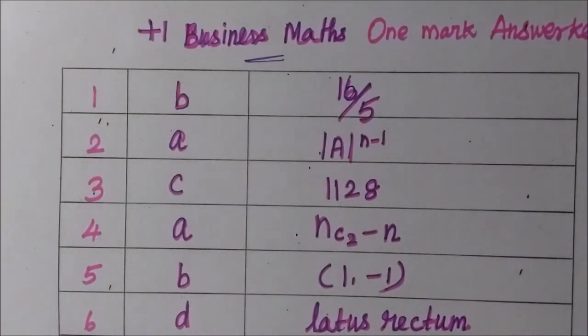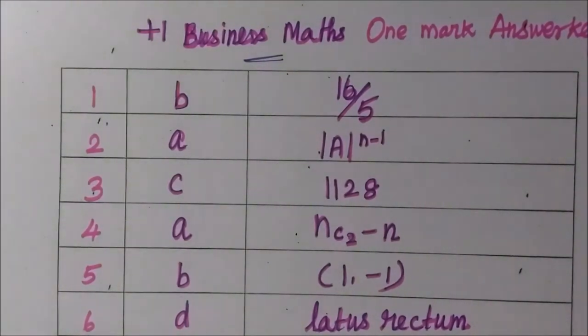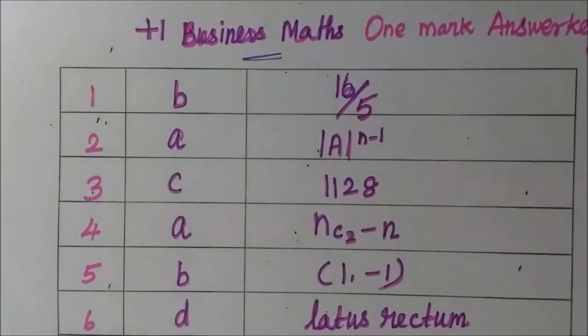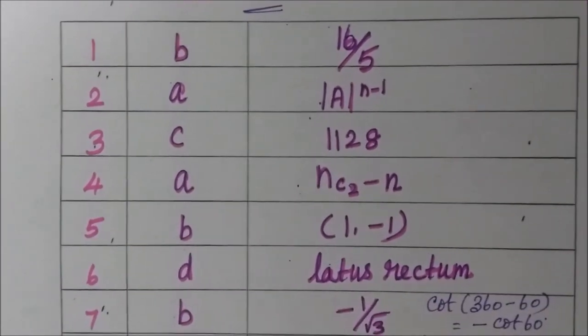Question number 1: option b, 16 by 5. Question 2: option a, |A|^(n-1). Question 3: option c, 1128. Question 4: option a, nC3 minus n. Question 5: option b, C(1, -1).